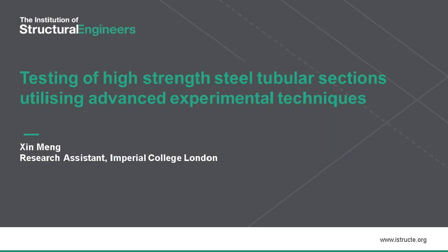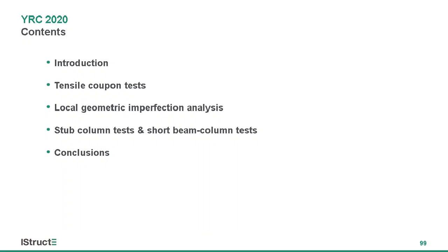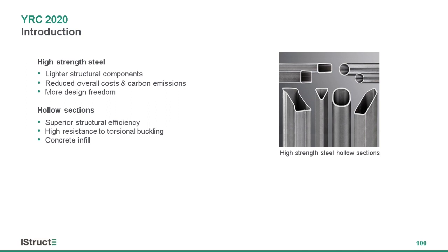Hello everyone, I am Shin from Imperial College London. Here I would like to talk about our work on testing of high-strength steel tubular sections using some advanced experimental techniques. I would like to start with a brief introduction, then talk about our experimental work, including tensile coupon tests, local imperfection measurements, stub column and short beam column tests, and finally, conclusions.